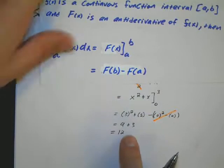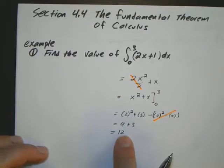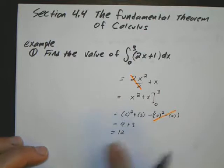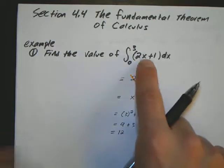And then this is going to give me 9 plus 3, which is equal to 12. So my integral value is 12. So the area under a curve, you could also think of this as going to be 12.